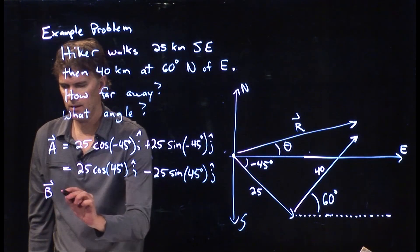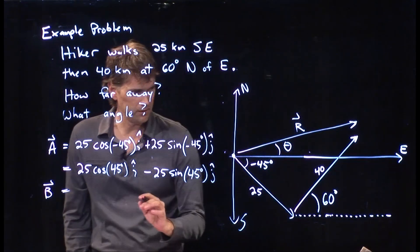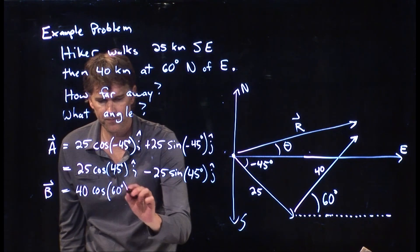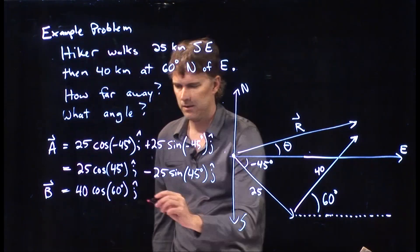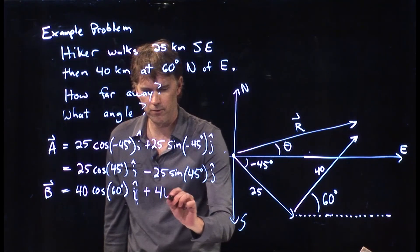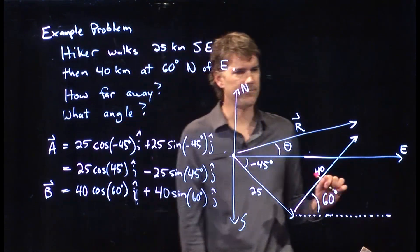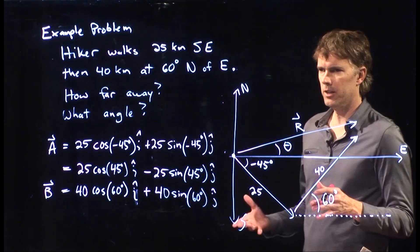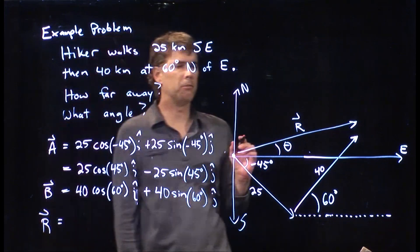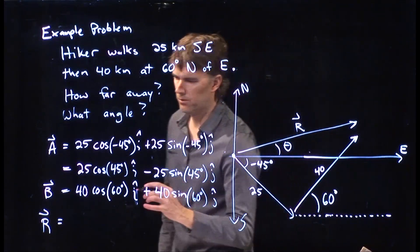What about the second leg, B? That one's pretty straightforward — everything is defined relative to the x-axis already. So vector B is just 40 times cosine of 60 degrees, i-hat, plus 40 times sine of 60 degrees, j-hat. R is the sum of those two, and if I'm summing the two vectors I can just add up the components.